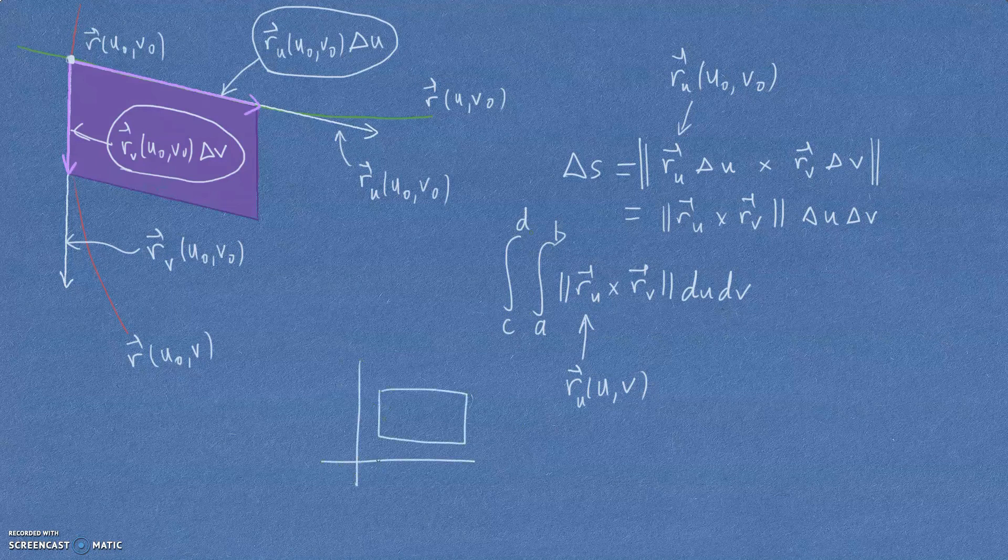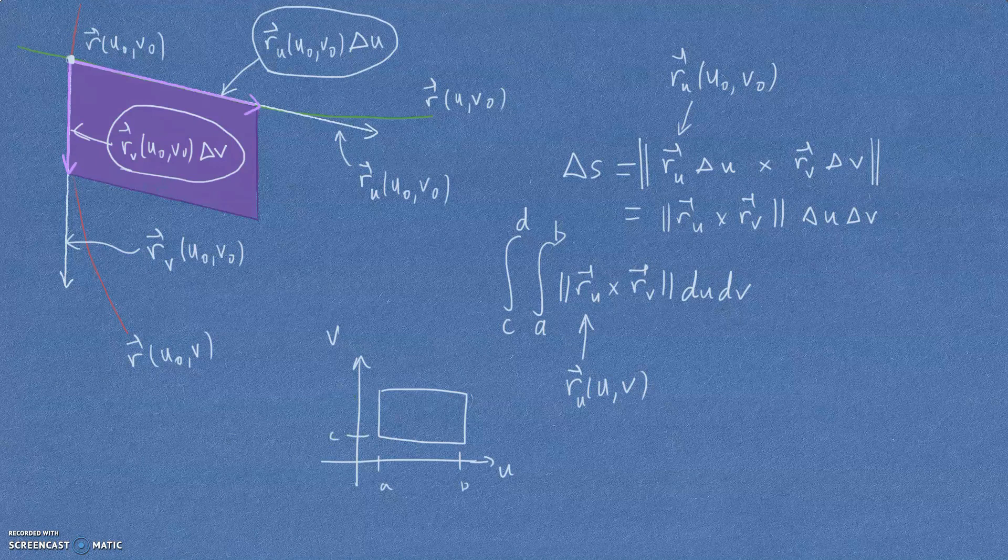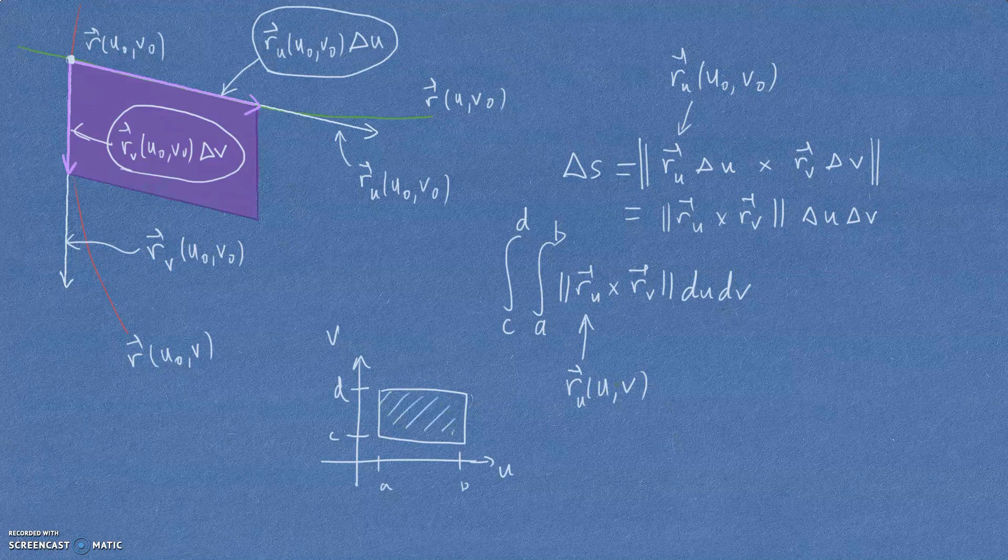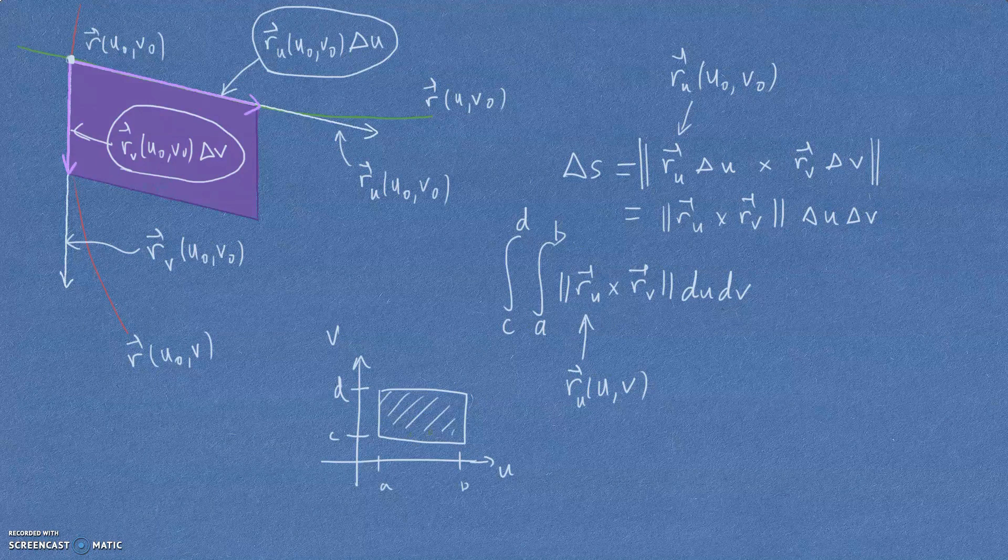And those represent the bounds for our rectangle, whatever that rectangle was, from A to B in the U direction. And for our V direction, we're going to range from C to D. Now, of course, you could get surfaces parameterized over regions that are not rectangles. And so you would simply do this integration over whatever domain you have that defines your surface portion. And that's pretty much it.